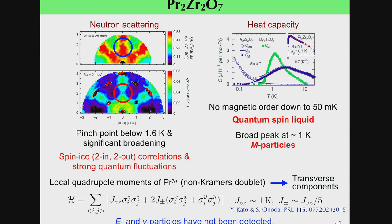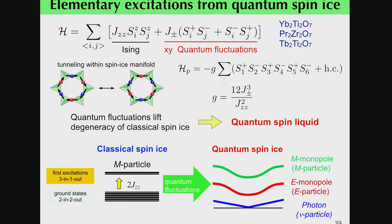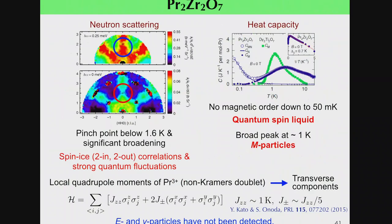The local moment of Pr atoms forms a non-Kramers doublet, so Pr ions create a transverse component in addition to the Ising term. This corresponds to the Hamiltonian shown before. From specific-heat measurements, we can estimate the exchange energies J_zz and J_±, which are as large as 1 K and one-fifth of J_zz, respectively.